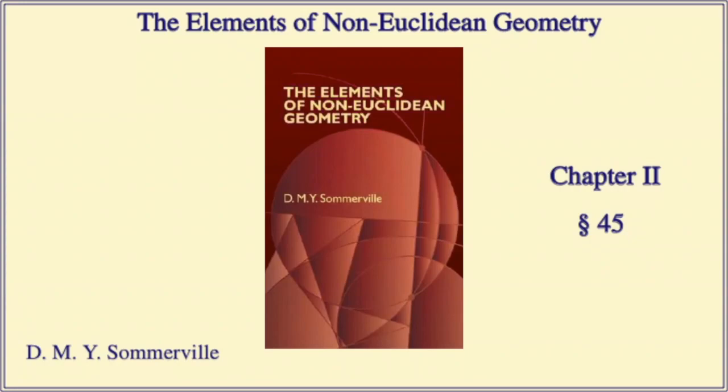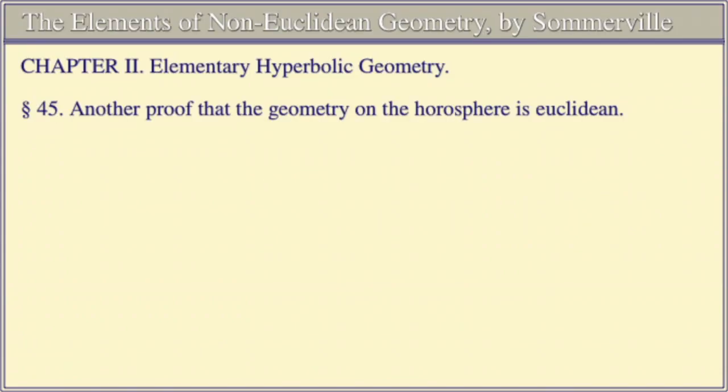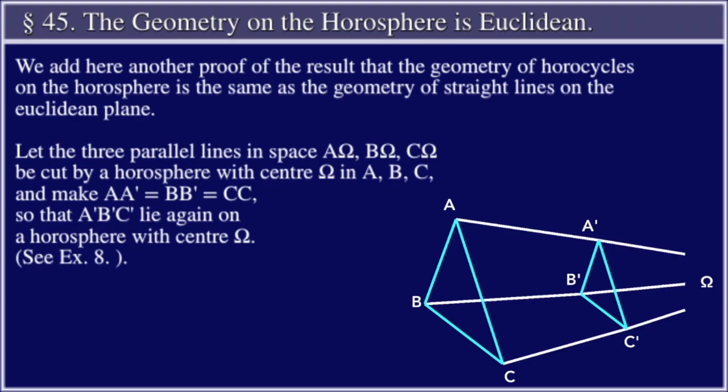The Elements of Non-Euclidean Geometry by D. M. Y. Sommerville. Chapter Two: Elementary Hyperbolic Geometry. Section 45: Another proof that the geometry on the horosphere is Euclidean. We add here another proof of the result that the geometry of horocycles on the horosphere is the same as the geometry of straight lines on the Euclidean plane.